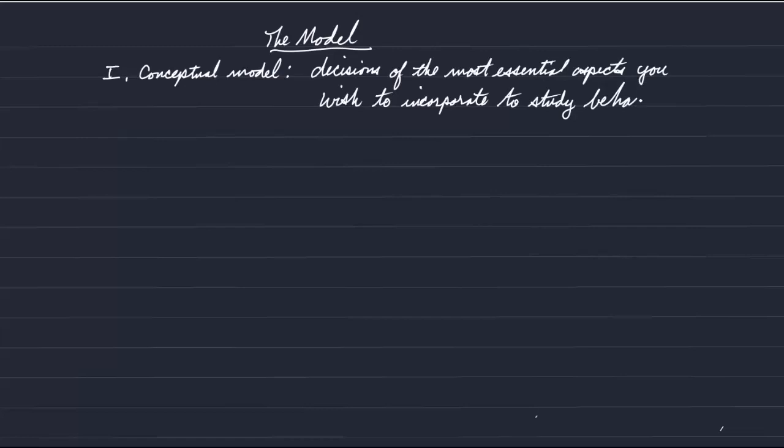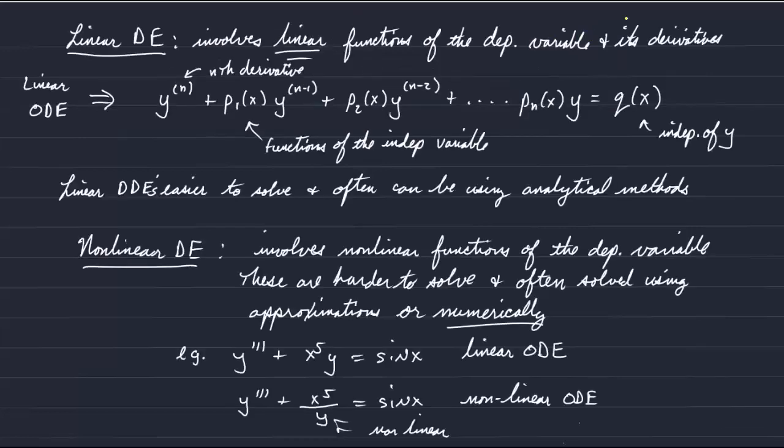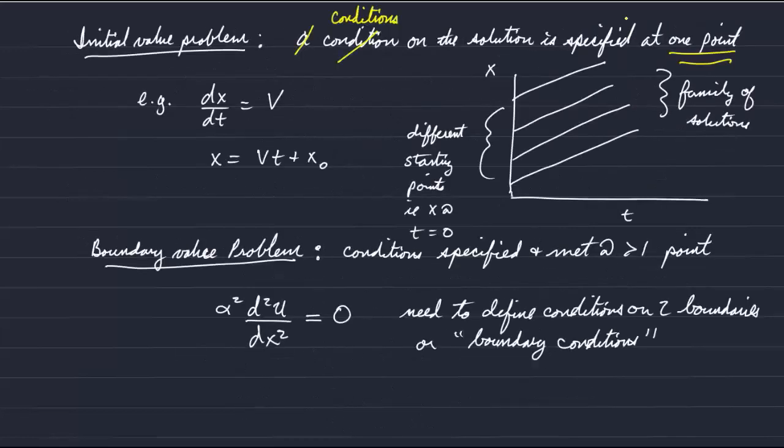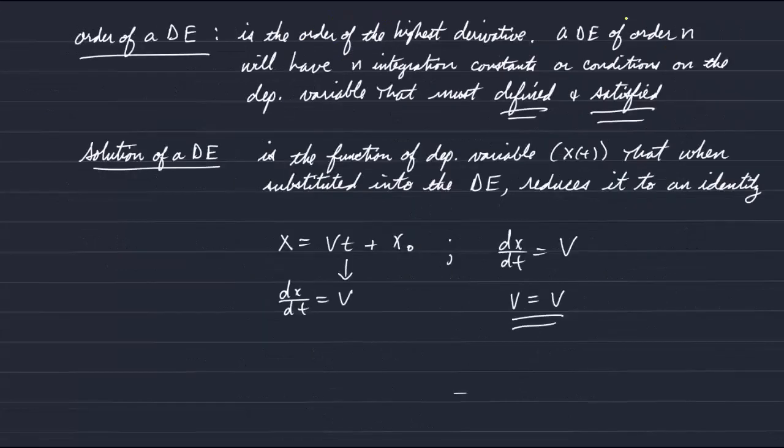And again, I refer you to section 1.3 of Greenberg for some very nice discussions of those sorts of decisions. For example, Greenberg discusses the situation of a mass on a spring, an oscillating mass on a spring. And he describes how if one wants to just study the motion of the spring, then it's appropriate to include the mass and acceleration term.